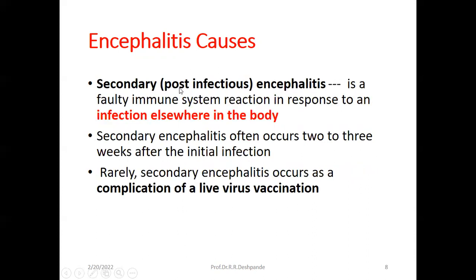Secondary or post-infectious encephalitis involves a faulty immune system reaction in response to an infection elsewhere in the body — not in the brain primarily. Secondary encephalitis often occurs two to three weeks after the initial infection. Rarely, secondary encephalitis occurs as a complication of live virus vaccination.